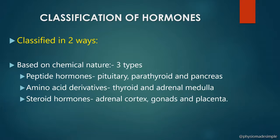Next come peptide hormones. Peptide hormones are made up of amino acids linked together in protein chains by peptide bonds. Examples include parathyroid hormones and pancreatic hormones. So, based on chemical nature, hormones are classified as peptide hormones, amino acid derivatives, and steroid hormones.